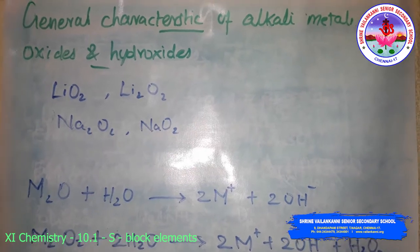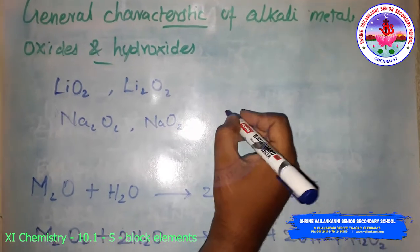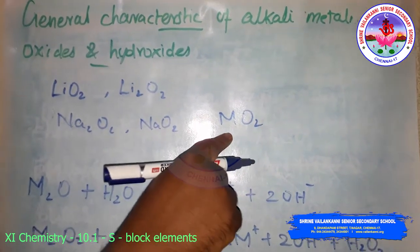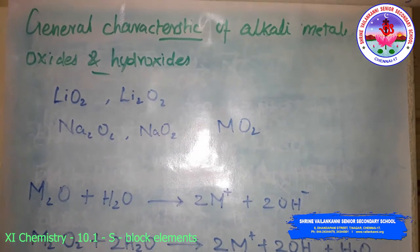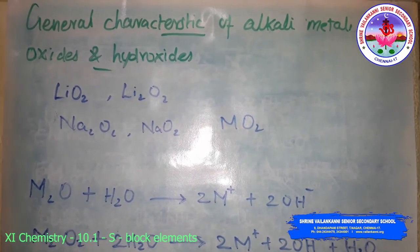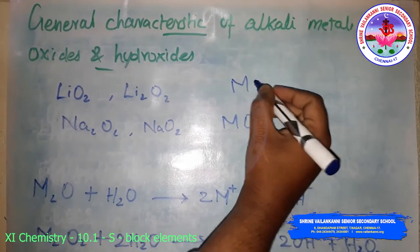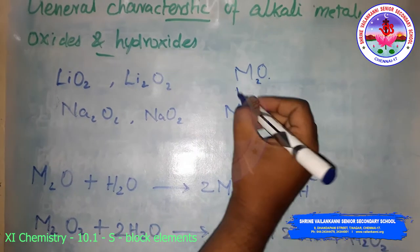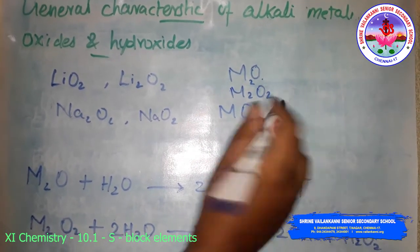Potassium, rubidium, and cesium form the superoxide MO2, where M indicates potassium, rubidium, or cesium. Under the appropriate conditions, the pure compounds formed are metal oxide, metal superoxide, and metal peroxide.